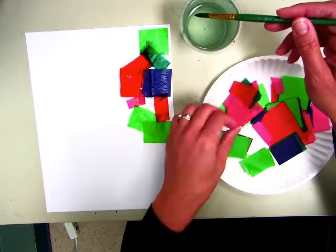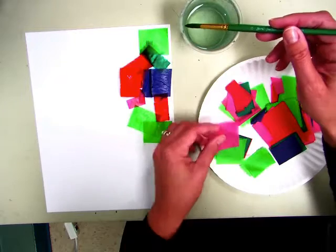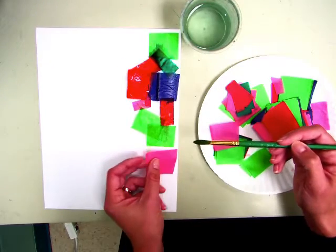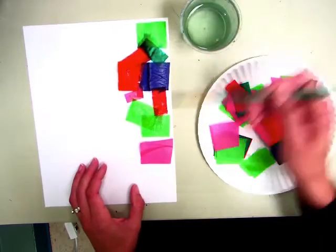The next time we see each other, your tissue papers will all be peeled off because they're on the drying rack and then they dry and fall off. It's a pretty cool process.